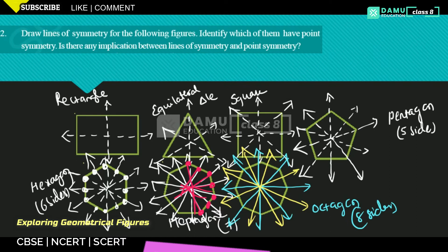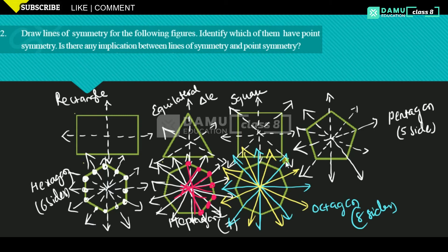So, they are asked: is there any implication between lines of symmetry and point symmetry? Definitely, there is a relation between point symmetry and line of symmetry. All the given shapes will have lines of symmetry, and all given polygons will also have point symmetry. If you check up and down, it will be seen. That is, if point symmetry exists, it means a line of symmetry will also be there in the shape. That is the implication we can give.